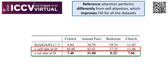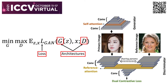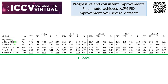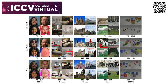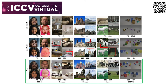Here come the comparisons. The last row shows that reference attention improves FID. Because all of our contributions are orthogonal to each other, when we combine them together we show progressive and consistent improvements over StyleGAN2. Our final model achieves at least 17% FID improvement over several datasets. Qualitative results also show our better outputs — we highlight common artifacts of StyleGAN2 in the red frames. Our code and models are available online. Thank you for listening.